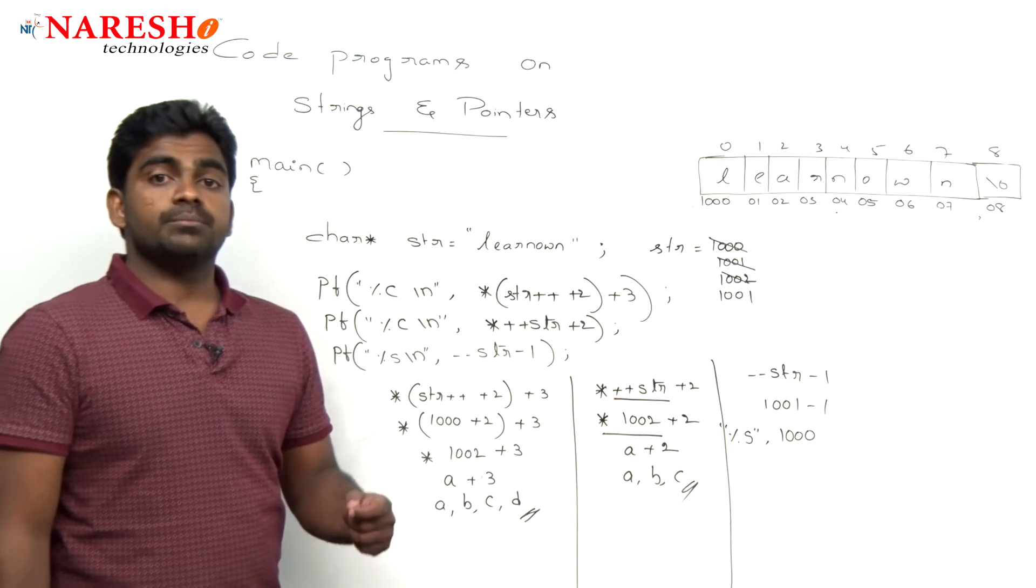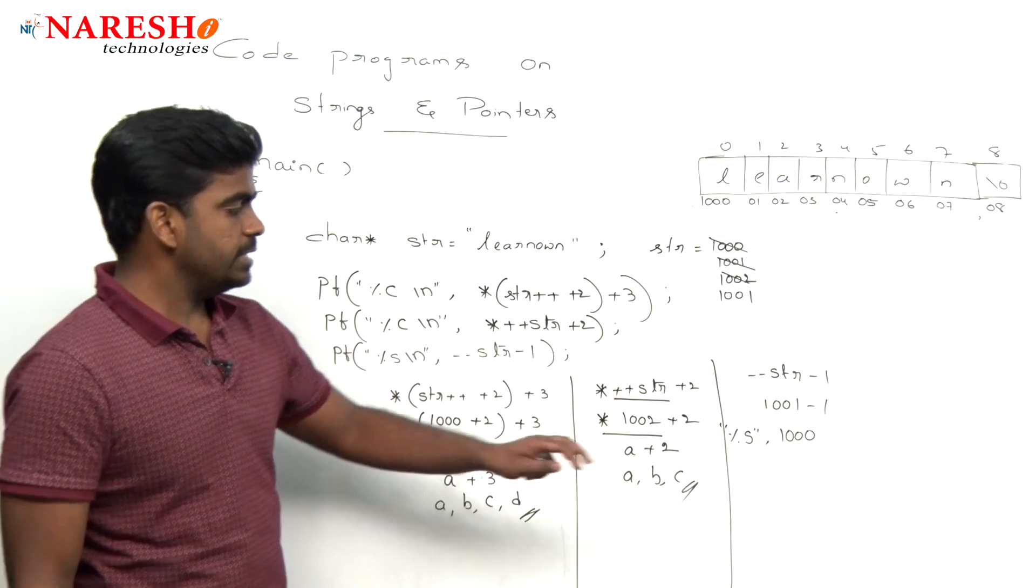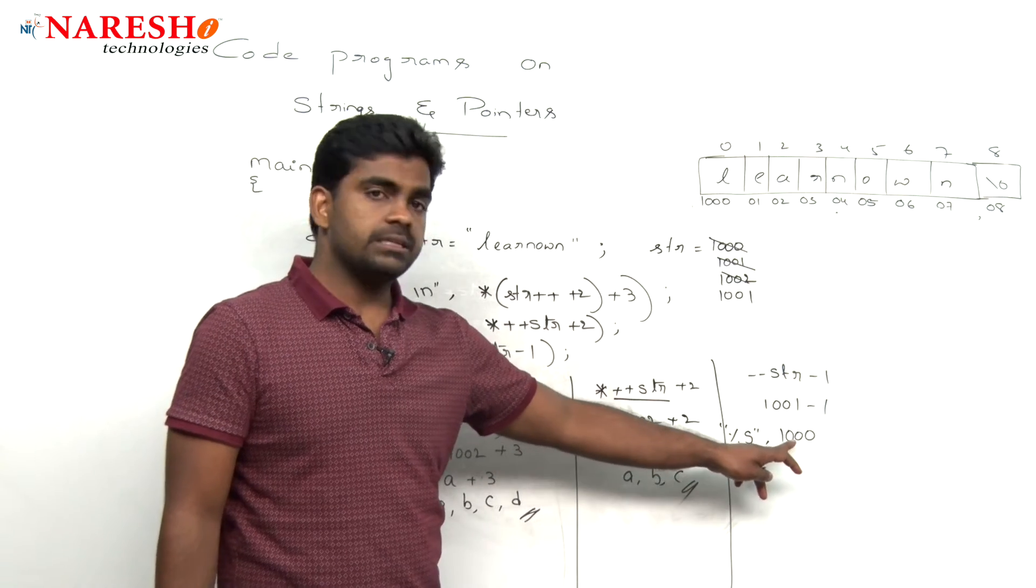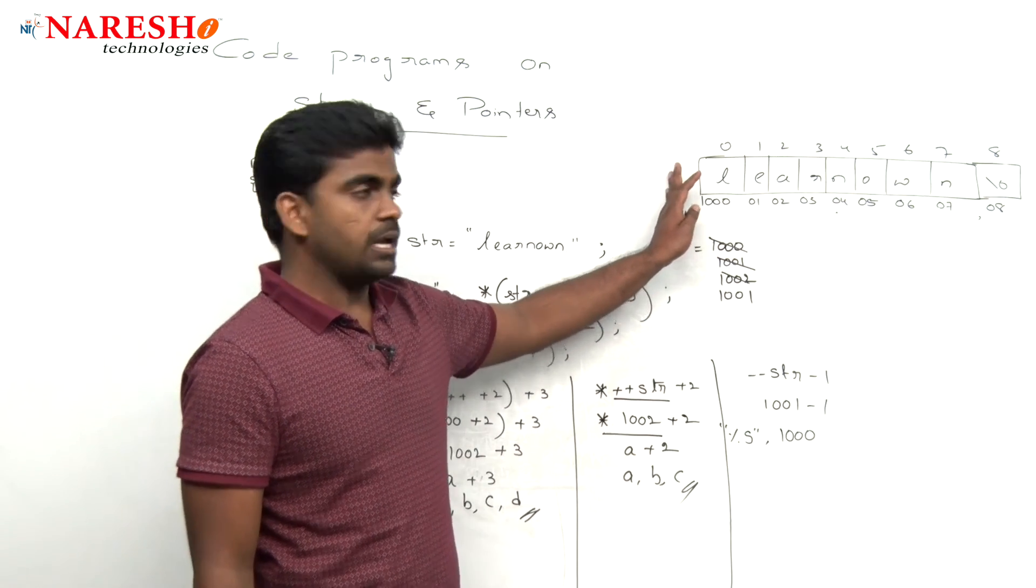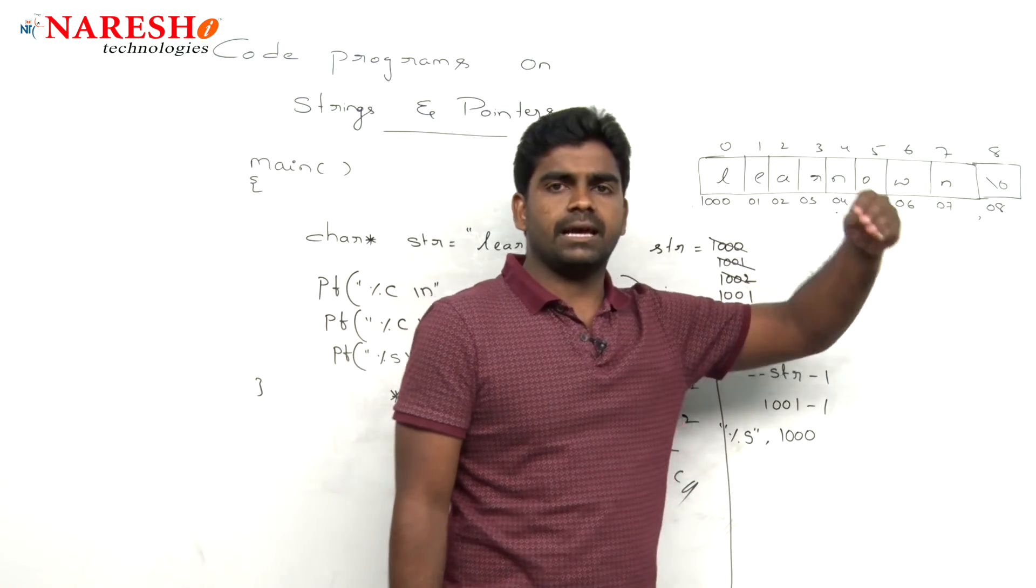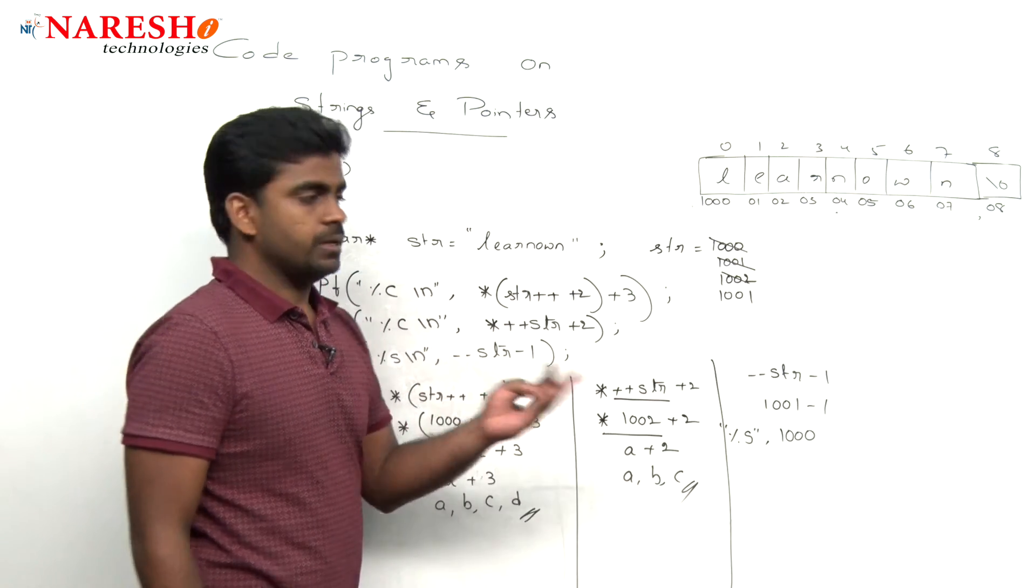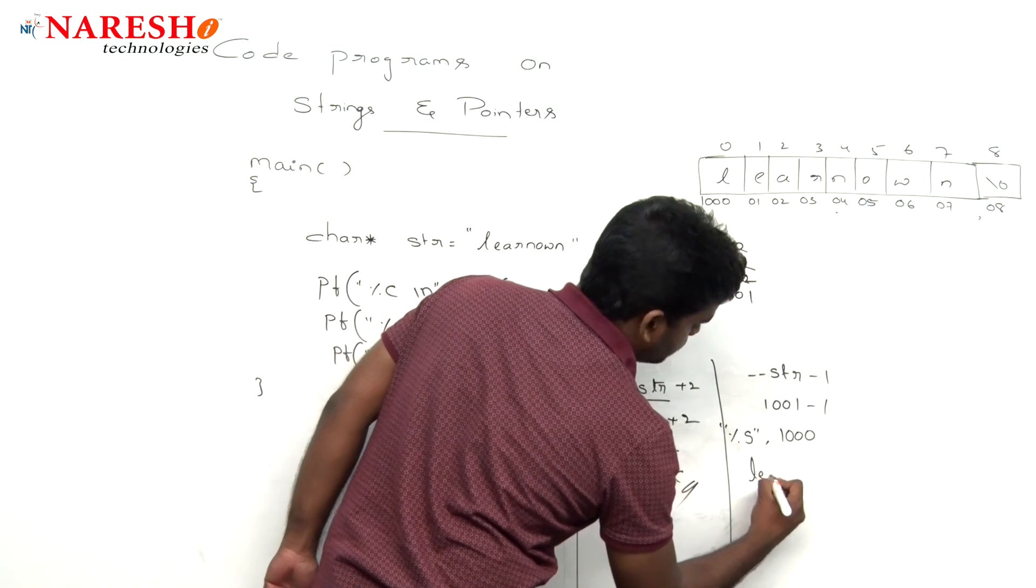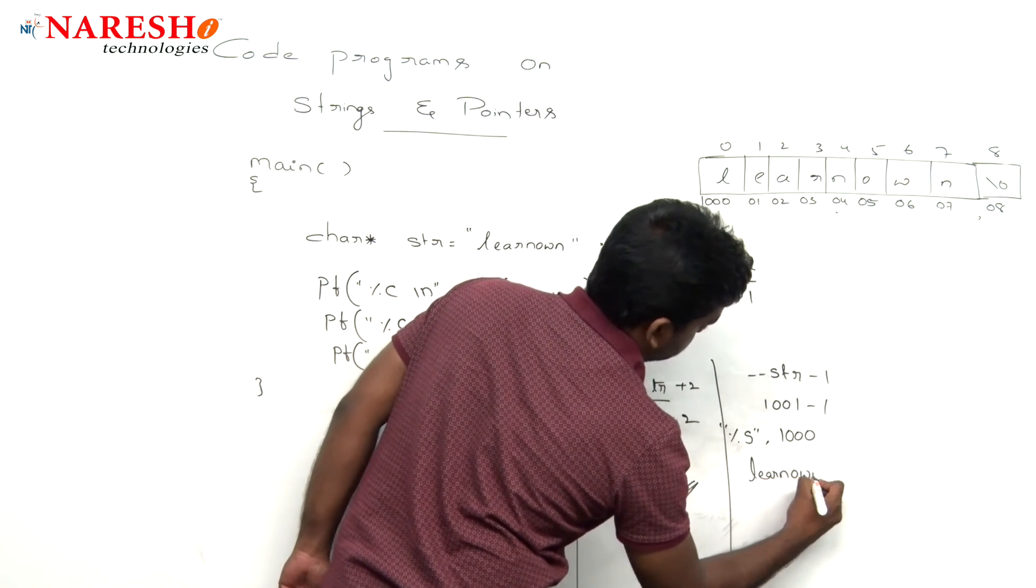Thousand, and here we mentioned that percentage s. You mentioned percentage s. So here it is, whenever you mentioned the base address, from the first location up to that null character all the characters will be displayed. So here it is, finally, it will give that value is 'a learn own', that is.